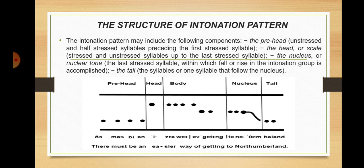Here you can see an example of the components of intonation pattern. The sentence sounds like this: 'There must be an easier way of getting to the Cumberland.' Here you can see the prehead: 'There must be an.' The head: 'easier' — this is the first stressed syllable. Then the body. The nucleus: 'way of getting to the Cumberland' — 'Cumberland' is the last stressed syllable. And the tail is 'land.'